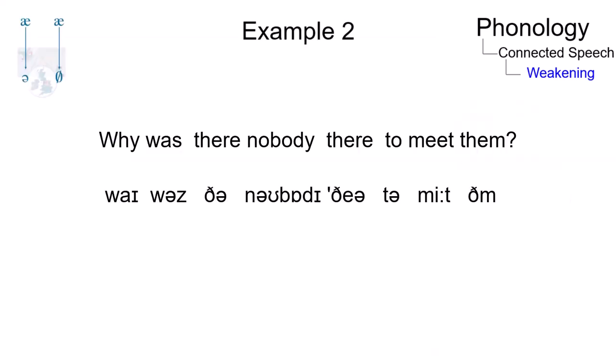This example exhibits four weak forms and nicely shows the difference between strong and weak. Why was there nobody there to meet them? The adverb there occurs twice as a strong form in stressed position and weakened in unstressed position.